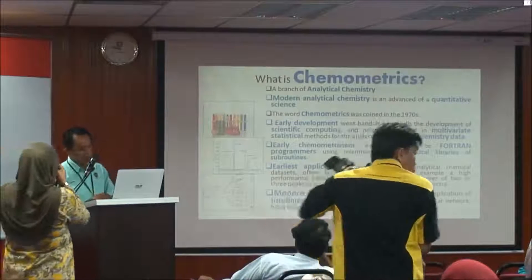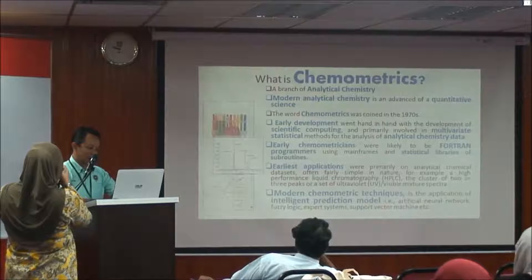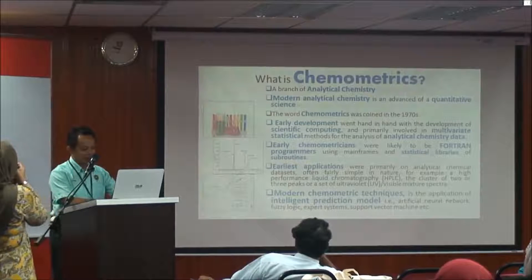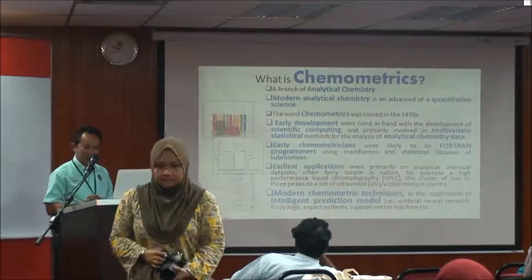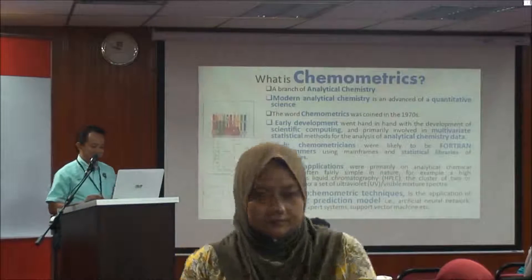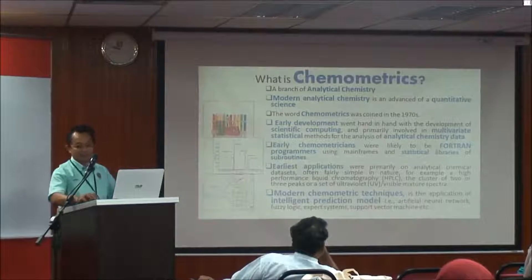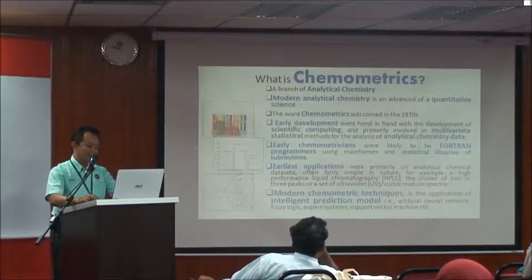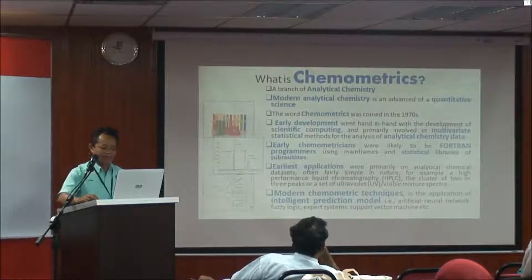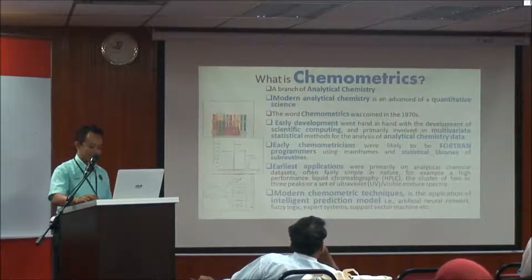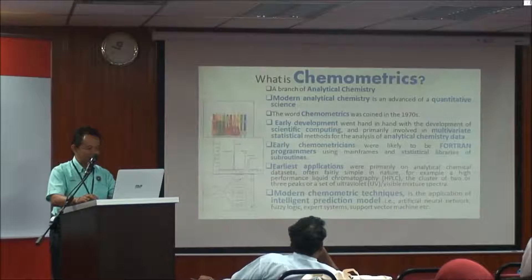What is chemometrics? Chemometrics is applied basic statistical analysis, multi-variate analysis, plus for modern chemometrics, plus artificial intelligence. The word chemometrics was coined in the 1970s. Early development went hand in hand with the development of scientific computing and primarily involved multi-variate statistical methods for the analysis of analytical chemistry data — actually for chemical data interpretation.